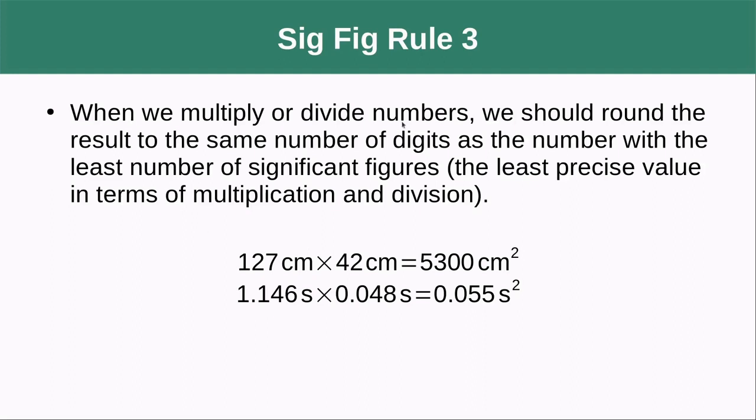When we multiply or divide numbers, we should round the result to the same number of digits as the number of the least number of significant figures, the least precise value in terms of multiplication and division.